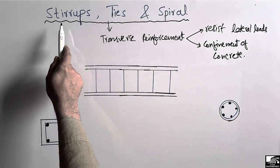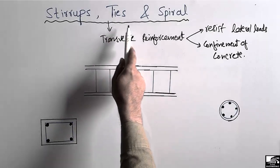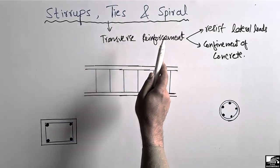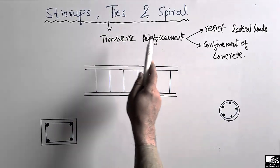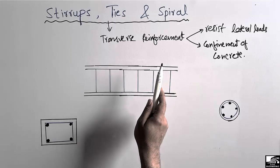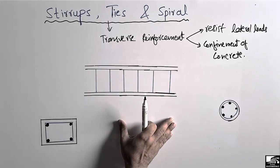So what is the difference between stirrups, ties, and spirals? I will explain the difference between these three technical terms in a very simple and easy way with examples.